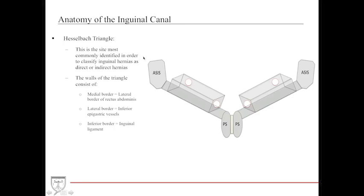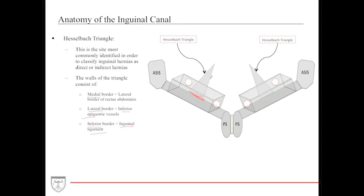The Hesselbach triangle is a common site used to classify inguinal hernias as either direct or indirect. The walls of the Hesselbach triangle are: the medial border being the lateral border of the rectus abdominis, the lateral border being the inferior epigastric vessels, and the inferior border being the inguinal ligament. The rectus abdominis — where your six-pack is — forms the medial border of the triangle, and the inferior epigastric vessels form the lateral border.